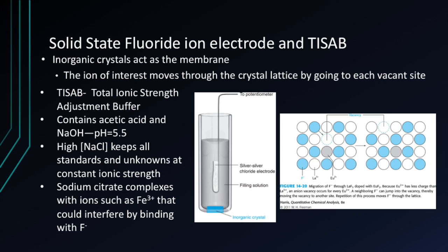The solid-state ISE — specifically the fluoride ion electrode — uses inorganic crystals as a membrane, and the ion of interest moves through the crystal lattice by going to each vacant site. TISAB stands for Total Ionic Strength Adjustment Buffer. It controls acetic acid and NaOH, resulting in a pH of 5.5, which is low enough to keep hydroxide ion from interfering. High sodium chloride keeps all standards and unknowns at a constant ionic strength, and sodium citrate complexes with ions such as Fe³⁺ that could interfere by binding with F⁻.